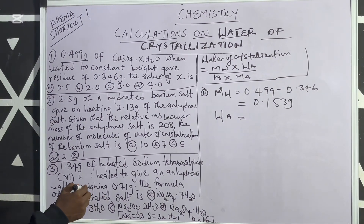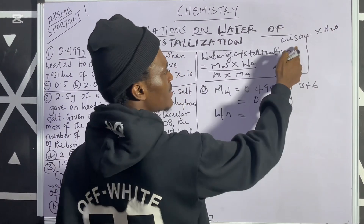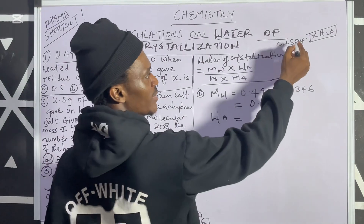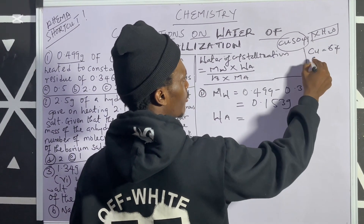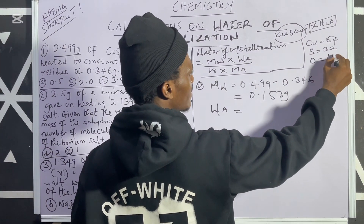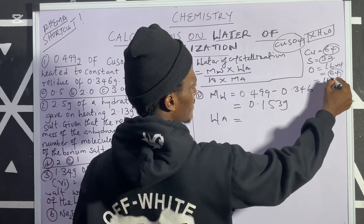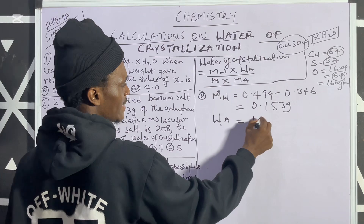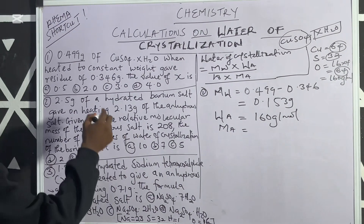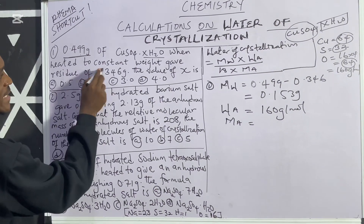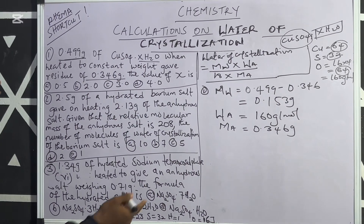What about the weight of the anhydrous? The anhydrous form of CuSO₄·xH₂O — once we remove the water of crystallization — is CuSO₄. Using relative atomic masses: copper is 64, sulfur is 32, and oxygen is 16 times 4 equals 64. Summing up: 64 + 32 + 64 = 160 grams per mole. So the weight of anhydrous is 160 g/mol. The mass of anhydrous (after heating, without water) is 0.346 grams.